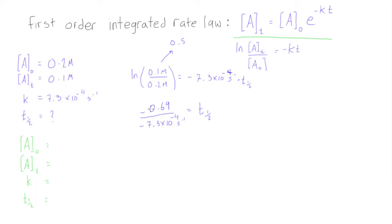Perfect, so now what we do, if we just divide this, negative 0.69 divided by negative 7.3 times 10 to the negative 4, punch that in your calculator, and we're going to get out about 945 seconds.